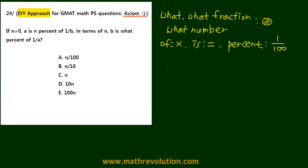Now we have a is n percent of 1 over b. So n times 1 over 100 times 1 over b. So we get n over 100b.